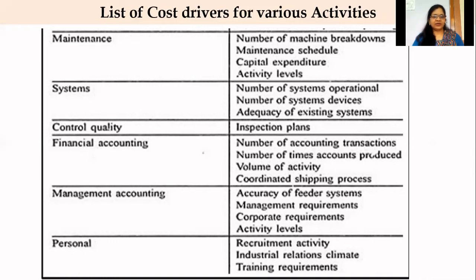For quality control, inspection plan will be the cost driver. For financial accounting, cost drivers include number of accounting transactions, number of times accounts produced, volume of activity, and coordinated shipping process. For management accounting, cost drivers are accuracy of feeder systems, management requirements, corporate requirements, and activity levels. Finally, for personnel activity, cost drivers are recruitment activity, industrial relations, climate training, and recruitment.